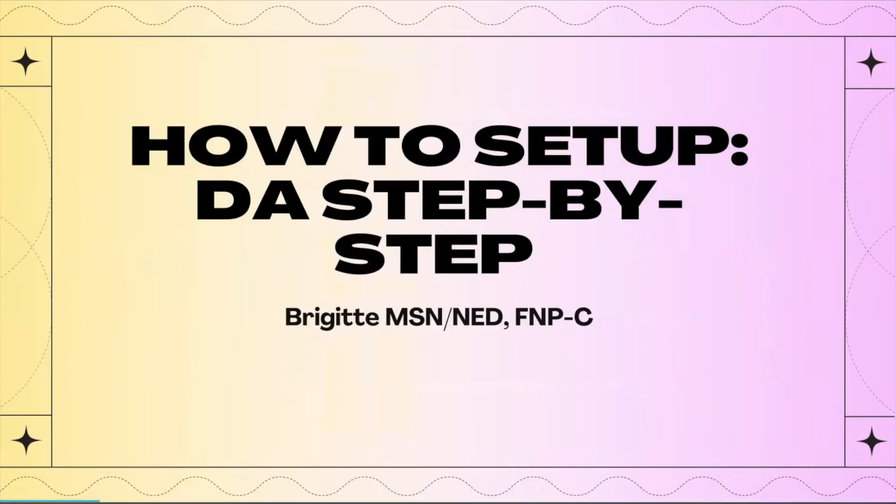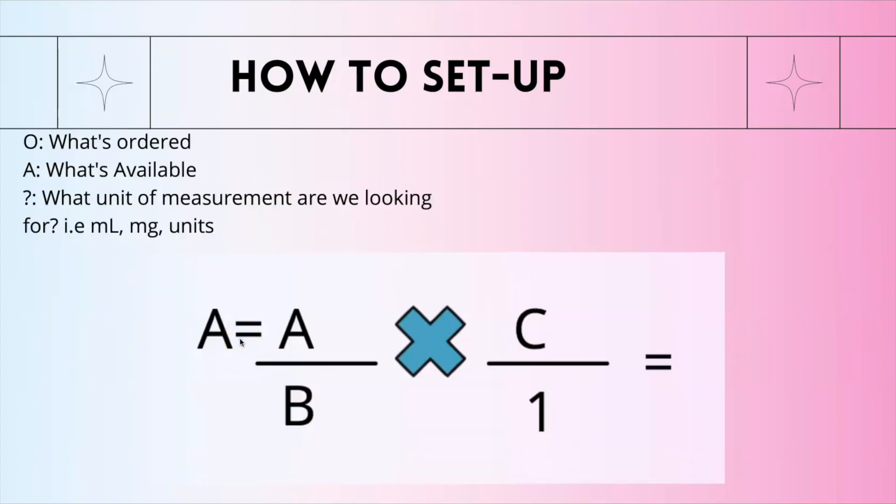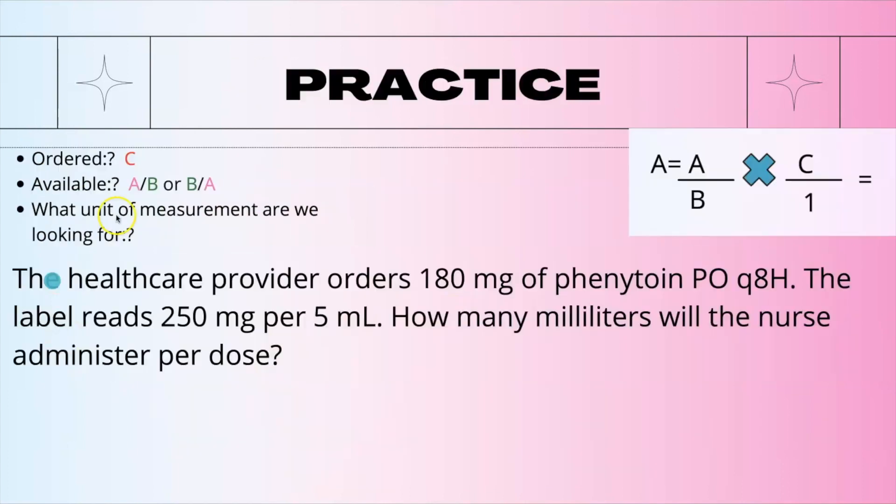How to set up dimensional analysis step by step. I always want you to write O, A, and then the question mark. O is what's ordered. A is what's available. The question mark is what unit of measurement are we looking for - milliliters, milligrams, or units? Whatever we're looking for is going to carry down to the A. Whatever we're looking for goes on top as the numerator. B goes on the bottom. C is always what's ordered. Let me give you an example.